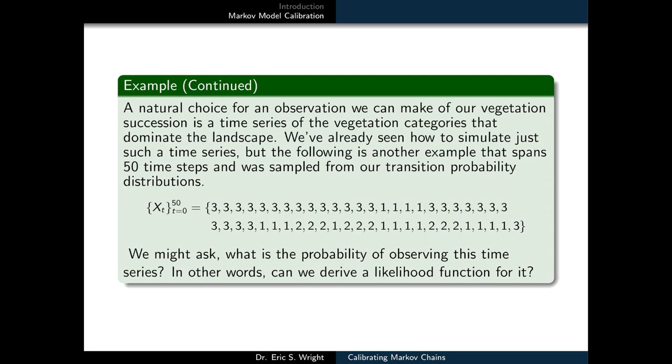Now different sequences of observations of our landscape are going to lead to different realizations of the time series. The numbers within it are going to be different. And the same can be said for different simulations of those sequences of observations. However, all of the different realizations of the time series should have similar statistical characteristics, and it's those characteristics that we're going to use in order to estimate our unknown parameters.